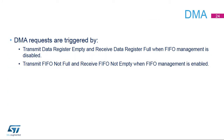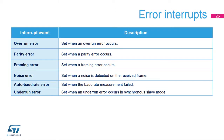DMA requests can be generated when Receive Buffer Not Empty or Transmit Buffer Empty flags are set when FIFO management is disabled. DMA requests can also be generated when the Transmit FIFO Not Full and Receive FIFO Not Empty flags are set when FIFO management is enabled. Several errors can be generated: Overrun error, Parity error, Framing error, Noise error on the received frame, Auto Baud Rate error when baud rate measurement fails, and Underrun error in Synchronous Slave Mode.